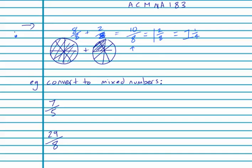We need to be able to convert from mixed numbers to improper fractions and back. So if I have an improper fraction and I want it to be a mixed number, what I need to do is work out how many wholes I have.